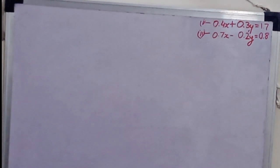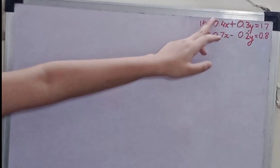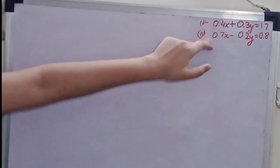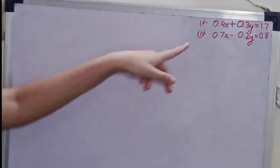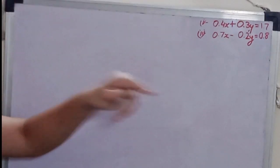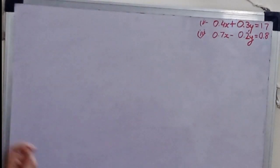The question is to find the value of X and Y. 0.4X plus 0.3Y equals to 1.7 and 0.7X minus 0.2Y equals to 0.8. Now, when we see these decimals, we get confused as to what to do. We get scared. And we don't have to.